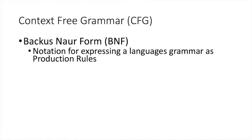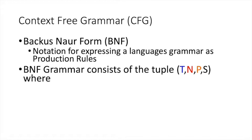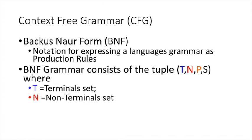Overall, a grammar represented in the Backus-Naur Form requires you to specify four things. First, you need to know what symbols appear in the valid sentences of the language you are going to define — these are called the terminal symbols. Then you define N, a set of non-terminal symbols. These are interim symbols used to define the structure of sentences, but they do not themselves appear in the final sentences.